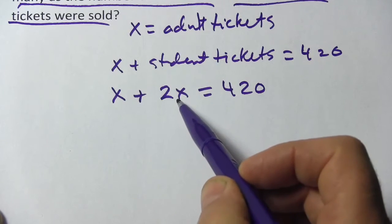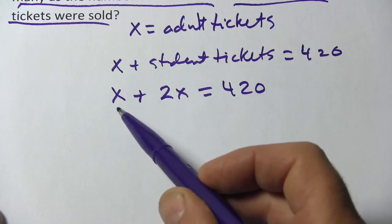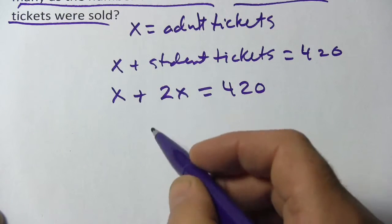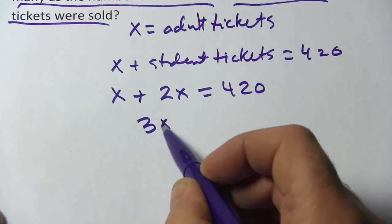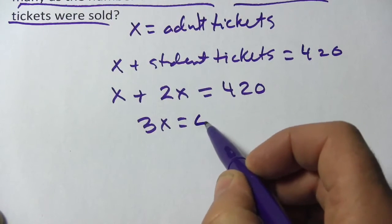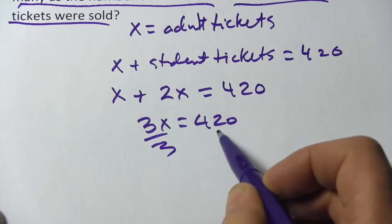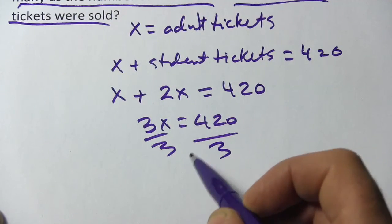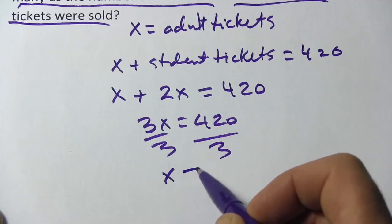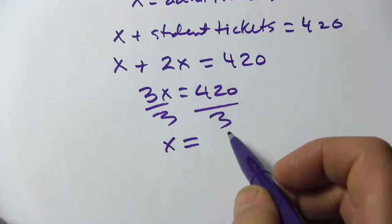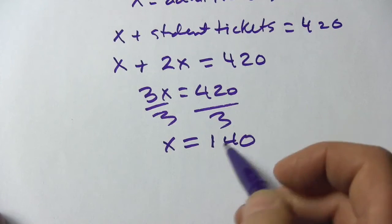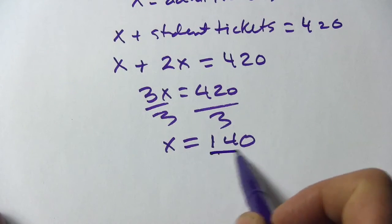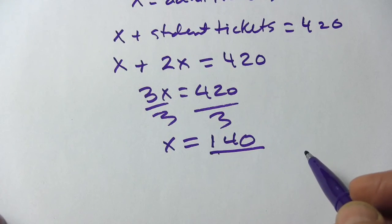We need to combine like terms. x plus 2x is 3x. That equals 420. We divide by 3 and we get x equals 140. And that is the number of adult tickets.